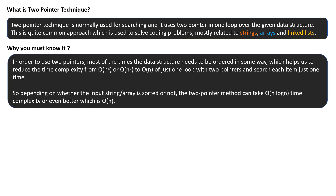Why you must know about it? In order to use two pointers, most of the time the data structure needs to be ordered in some way, which helps us to reduce the time complexity from O(n²) or O(nq) to O(n). That is the reason you should know about this algorithm — it uses just one loop with two pointers and searches each item just one time.